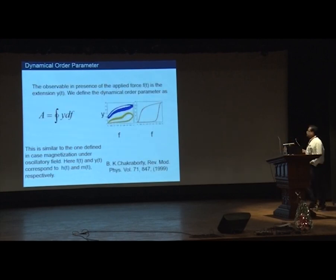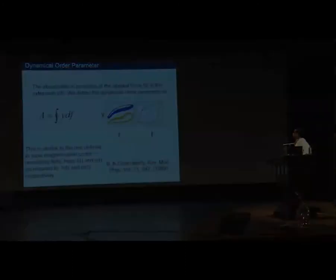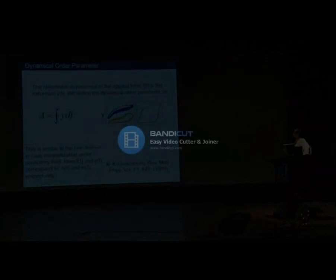Whenever you are considering this, one dynamical order parameter is the area of the loop. You try to calculate under oscillatory force the area. If you trace an area like this, then you call your system or DNA in the zipped state. If area goes like this, then you call it in the unzipped state.